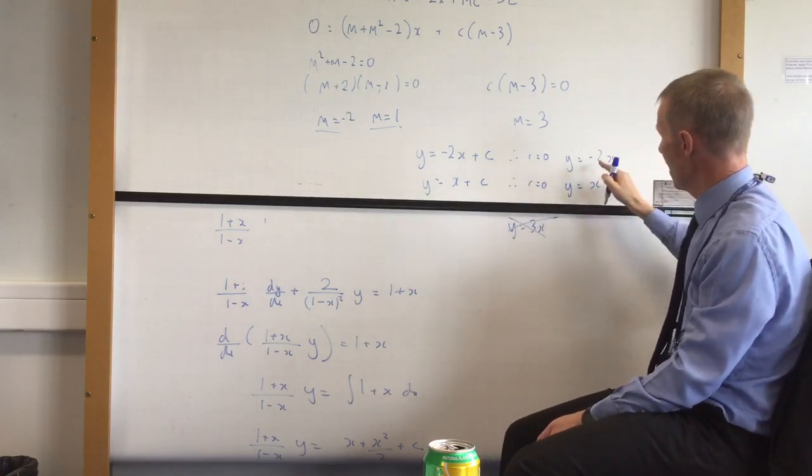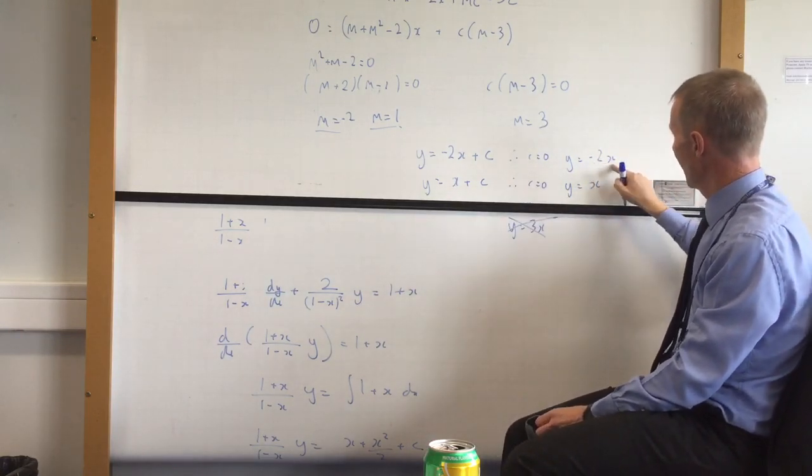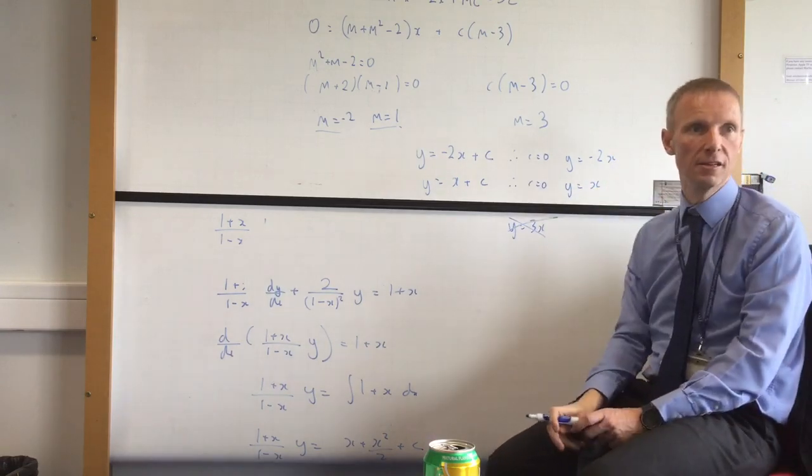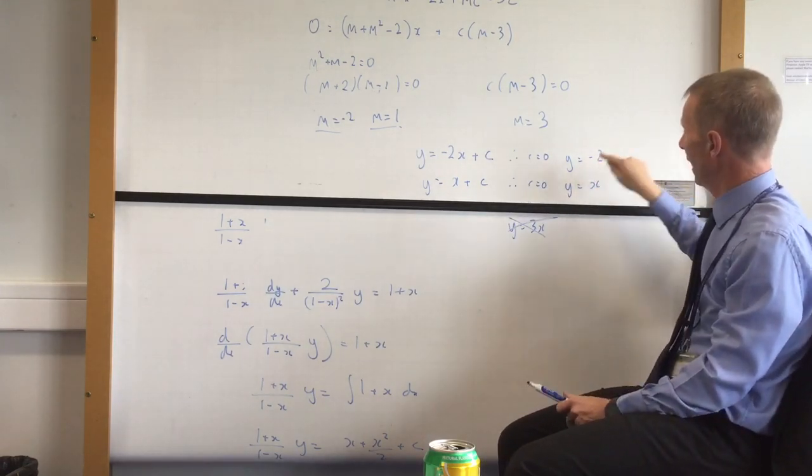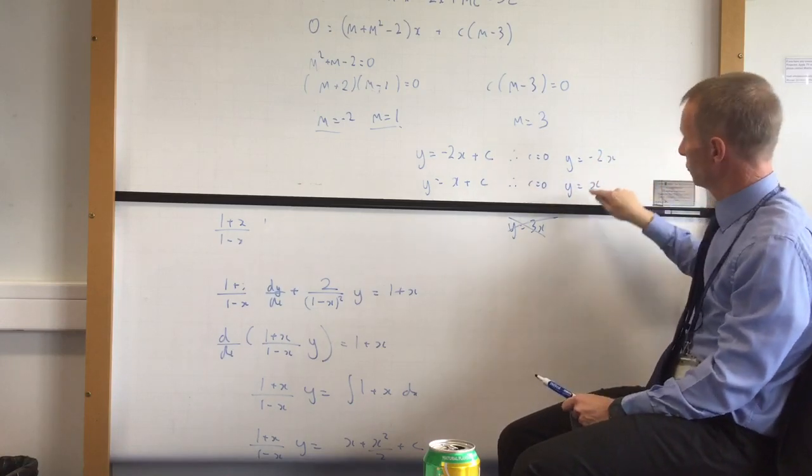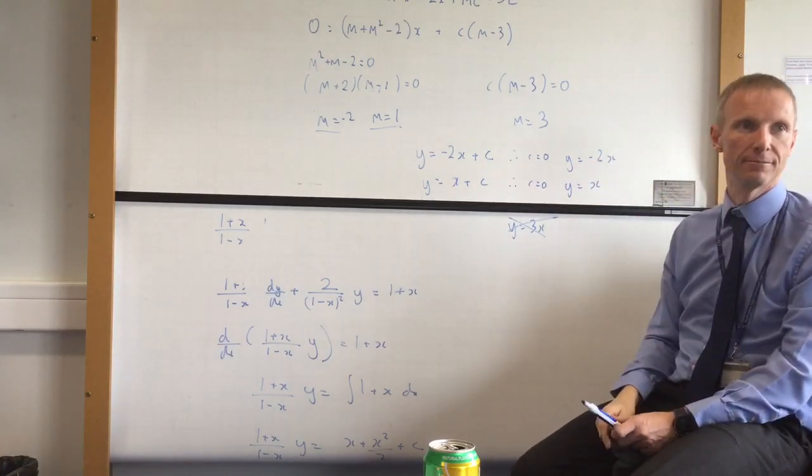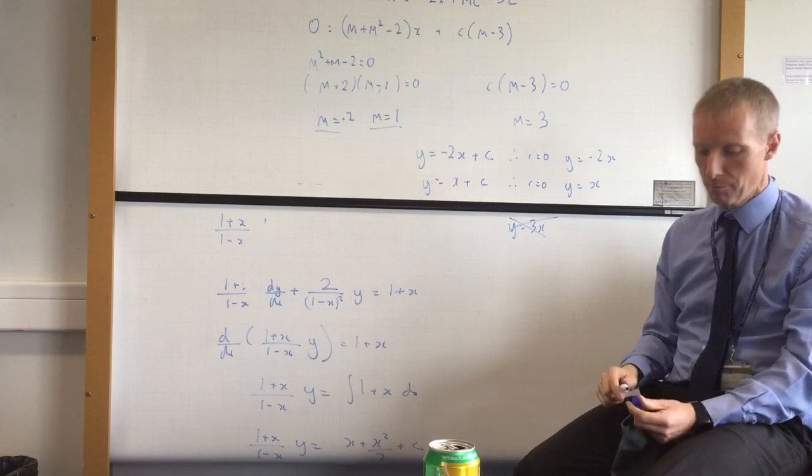So there are two invariant lines, y equals minus 2x and y equals x. So every point on that line maps to somewhere else on that line, and everywhere on that line maps to somewhere else on that line. That's invariant points.